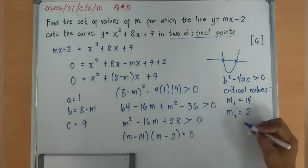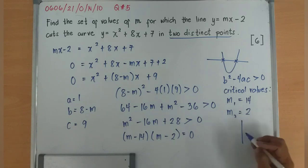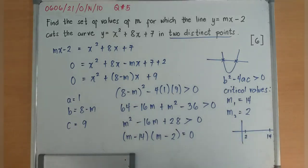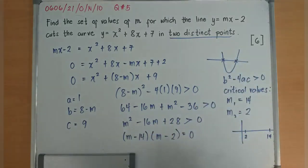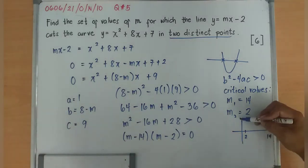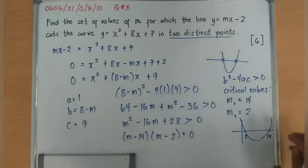Let me erase this part so that I can draw the figure. Critical values are 2 and 14. Let's say 2 is here, 14 is over here. Does the curve open upward or downward? It opens upward because the m² is positive. So it opens upward.